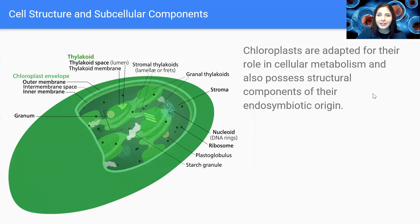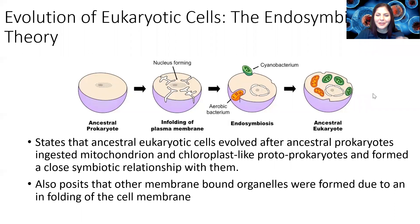So just like the mitochondria, chloroplasts are actually adapted for their role in cellular metabolism and they also possess structural components of their endosymbiotic origin. So you've heard me say that twice now, endosymbiotic origin. But what exactly is it?